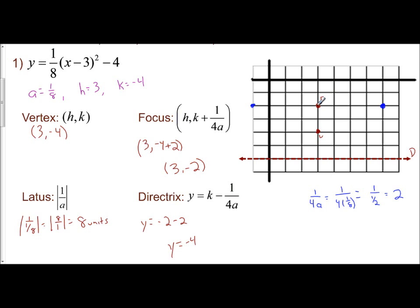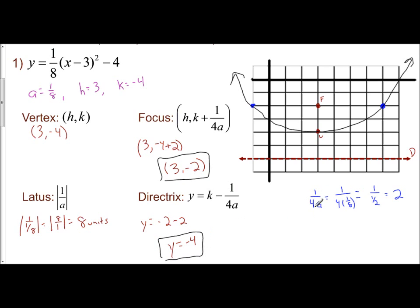So the length of the lattice is 8 units. The lattice's midpoint is our focus. So if the whole lattice is 8 units, you go 4 to the right and 4 to the left. We use our focus as where we start, take the lattice value divided by 2, and go that far right and left. Then from your vertex, come up and go through the points you found using the lattice — and there is the graph of our vertical parabola represented by y equals 1/8 times the quantity x minus 3 squared minus 4.